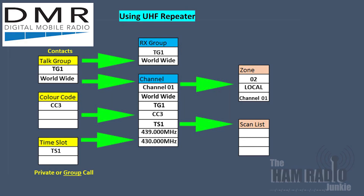Where the operator then wants to access a UHF repeater, they've set up talk group 1 on the worldwide network, and this time it's on colour code 3, which is the access code into the repeater. It is still on timeslot 1, and it is still a group call. You'll notice the only difference this time is that the frequency has obviously changed to access the input and the output of the repeater, and the colour code has changed as the access to the repeater is different from the hotspot.